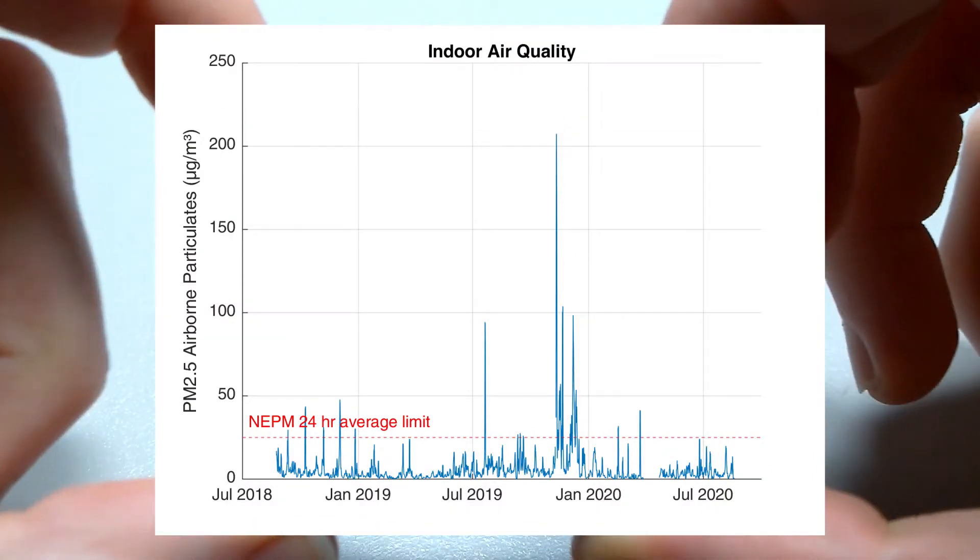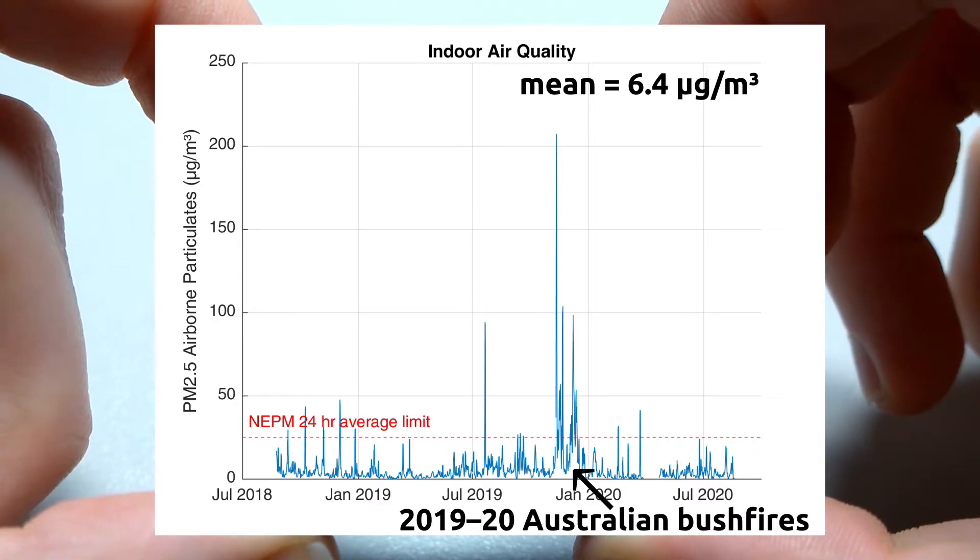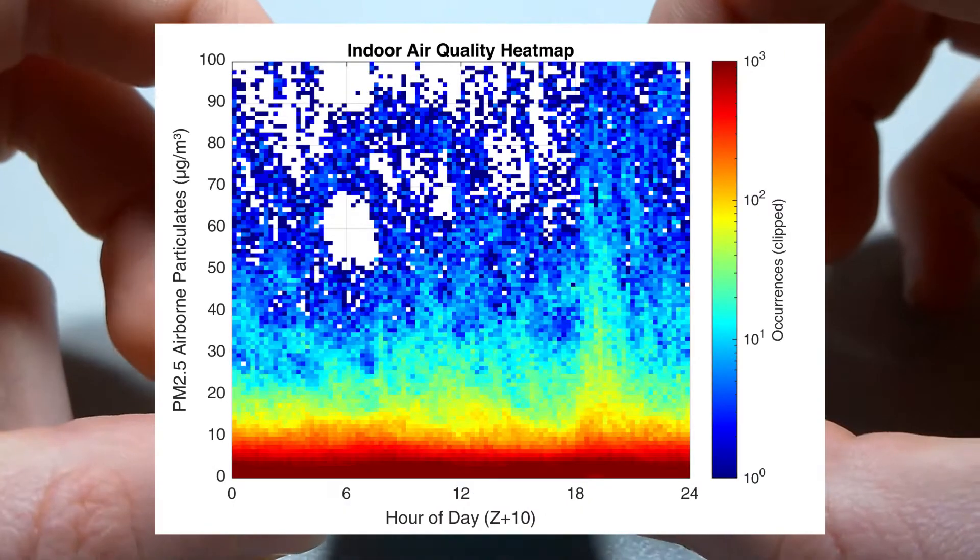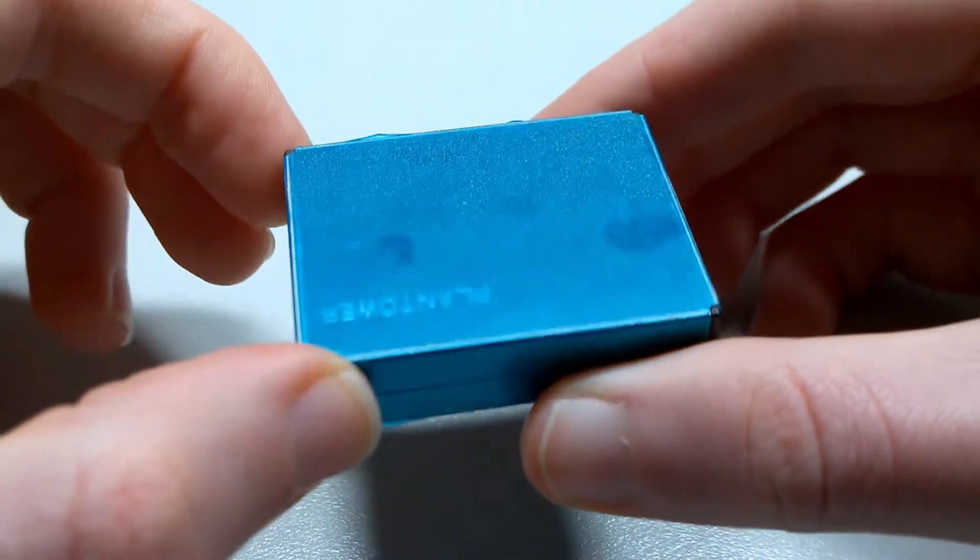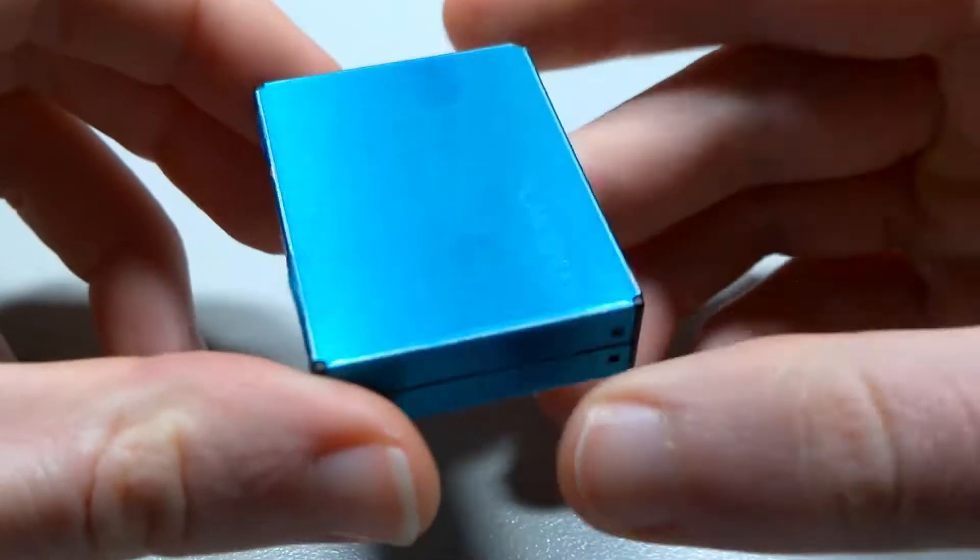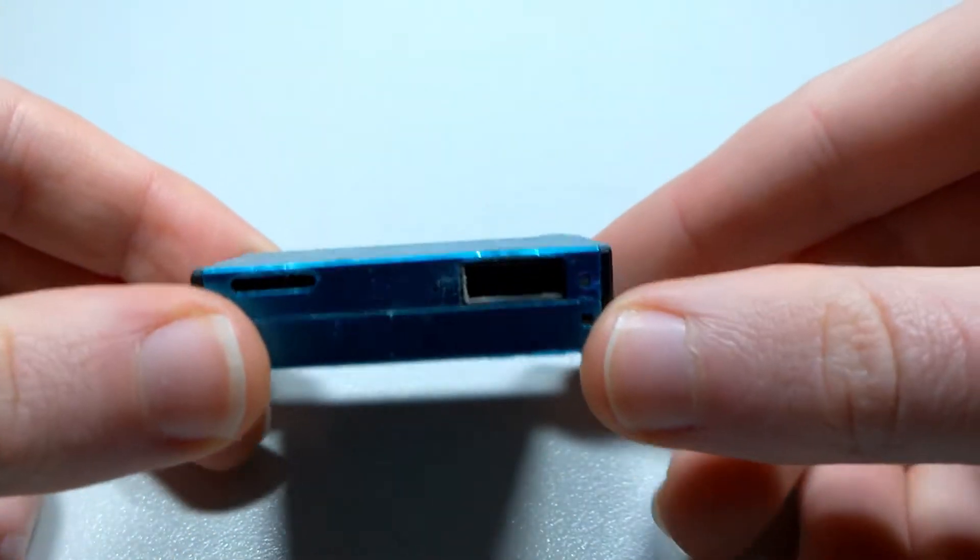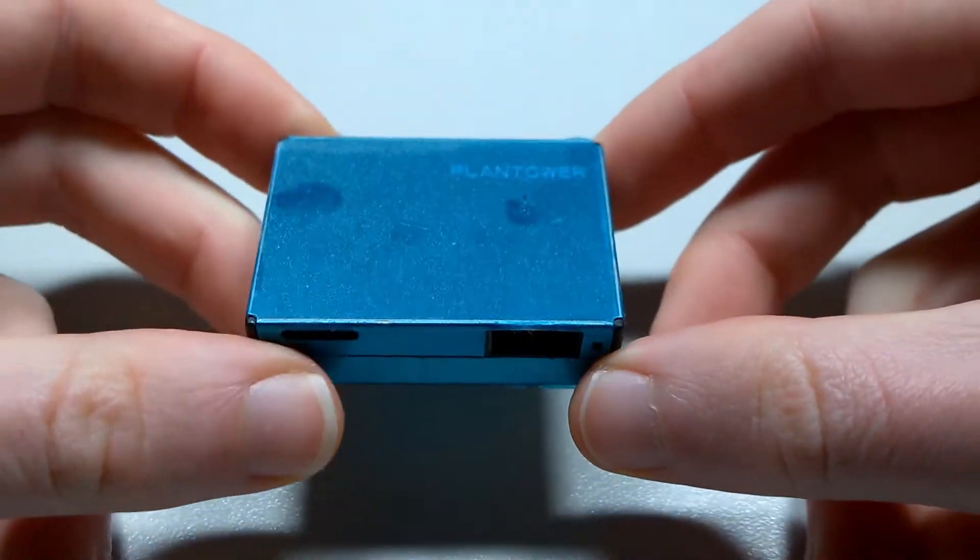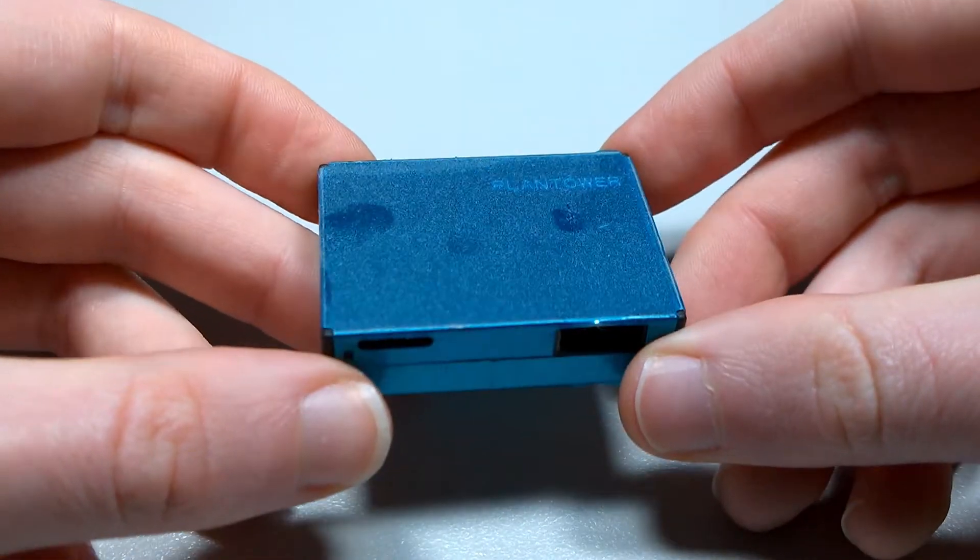In particular, you can really see the fires we had recently at the start of 2020. Although on average over the past two years, it's been exposed to an average of 6.4 micrograms per cubic meter of dust at PM2.5 size. So it hasn't been in the most demanding scenario.